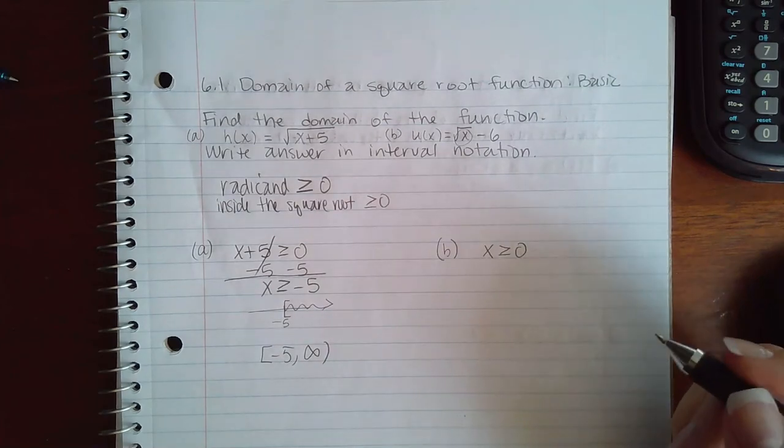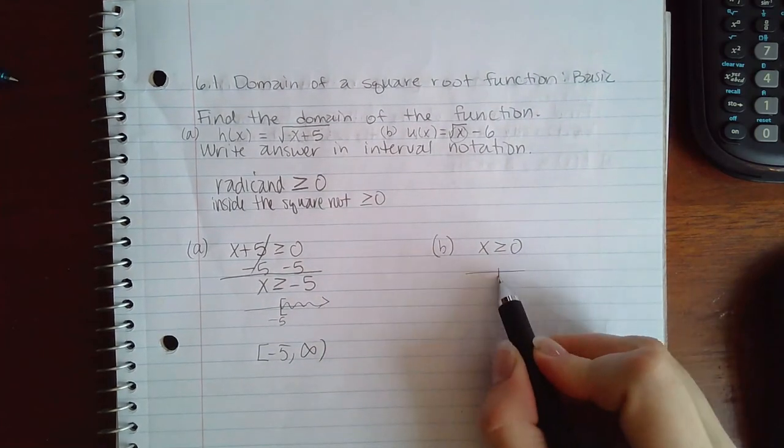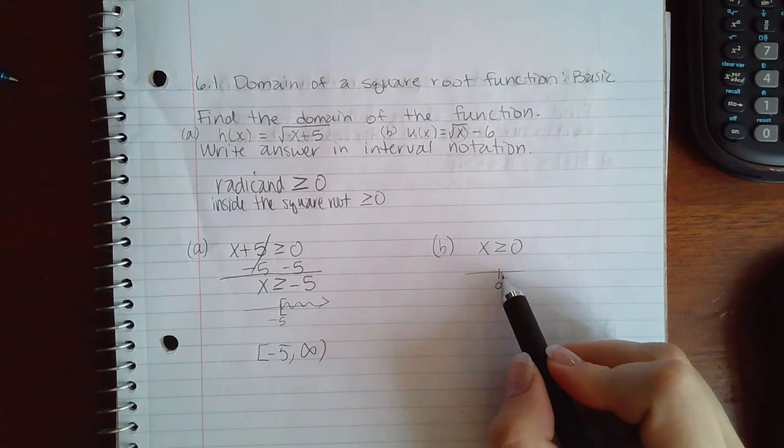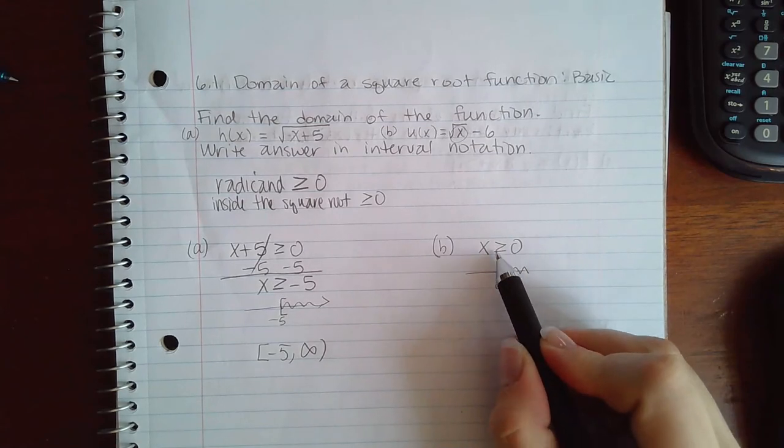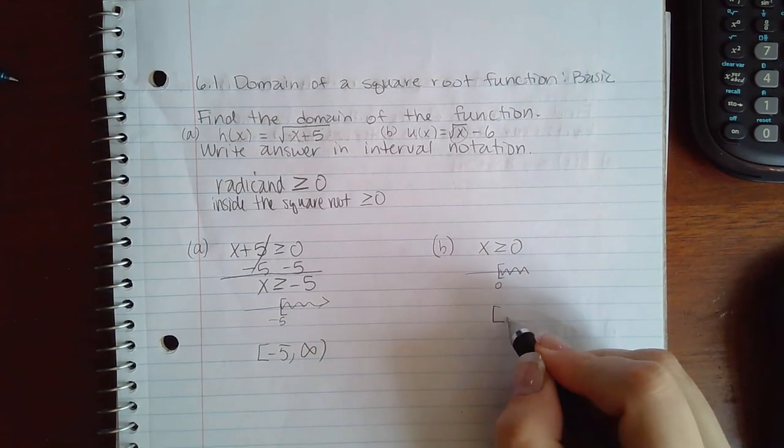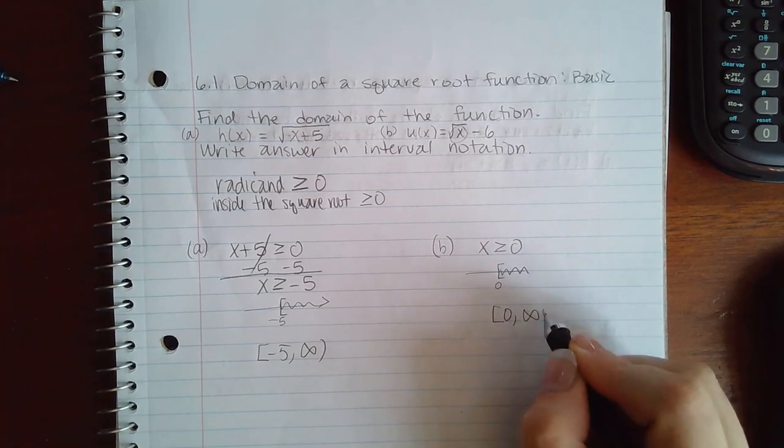I don't need to solve for x, it's already solved for. So if I graph that on a number line, that's from zero and everything bigger. And because of the bar it'll be a bracket. So the domain there would be zero to infinity.